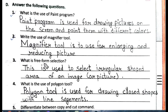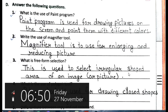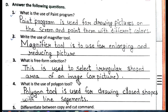Third question: What is Free-form Selection? Free-form Selection is used to select an irregular-shaped area of an image or picture. It selects irregular-shaped areas of an image or picture.